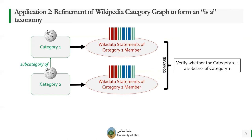Scientists previously used statistical and probabilistic approaches to solve this problem. But thanks to Wikidata, we can process the Wikidata statements of category one members as well as category two members, and compare them to verify whether category two is a subclass of category one or not. By that, we can trim and refine the Wikipedia category graph to form an IS-A taxonomy.